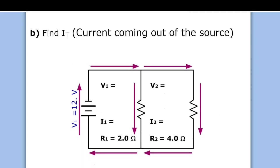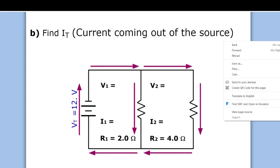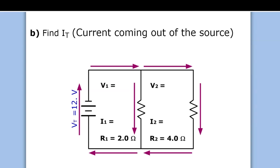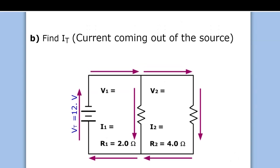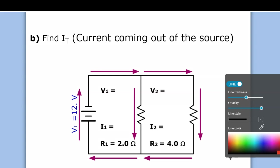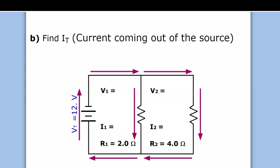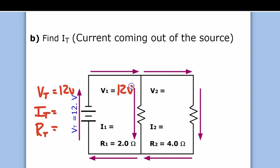Now find the current coming out of the source. This is a parallel circuit — definitely parallel if you've got the branching. Let's treat this like a crossword puzzle: if I don't know something right away, I can get there by finding the other clues. Set up VT equals, IT equals, RT equals. VT equals 12 volts. The reference table says the total voltage is equal to the voltage drops across each branch — that's the first thing I always love to do.